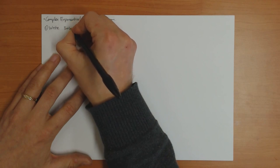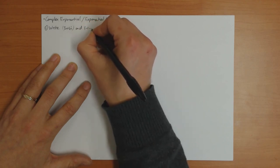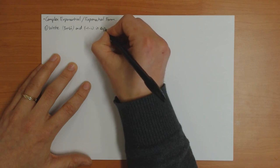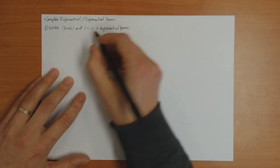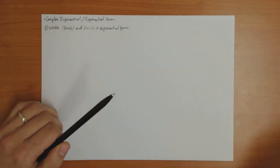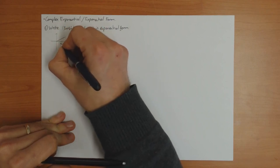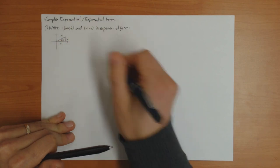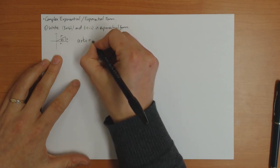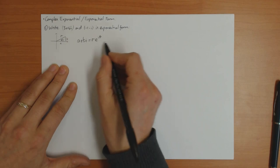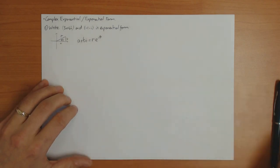So write 3 plus 4i, and let's do another one, minus 1 minus i in exponential form. So actually minus 1 minus i, maybe I'll do first, because that's the easiest. Remember the idea is that if you have a complex number, this is a and this is b, and this is r and this is theta. The relationship is a plus bi is equal to r e to the i theta.